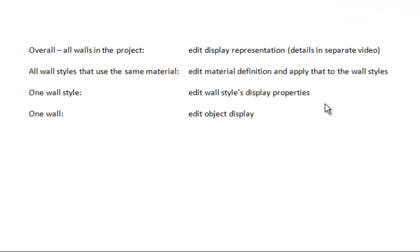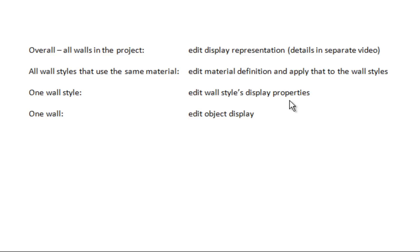I've made a little chart here to help you understand the hierarchy. If you want to edit all the walls in the whole project, you would edit your display representation. If you want to edit all the wall styles that use the same material — like my example with block — you would edit the material definition and apply that to those wall styles. If you want to edit one wall style only, you would edit the wall style's display properties. And if you want to edit only one wall, you would edit the object display. I'm going to go through the last three choices — the display representation will be a separate video.